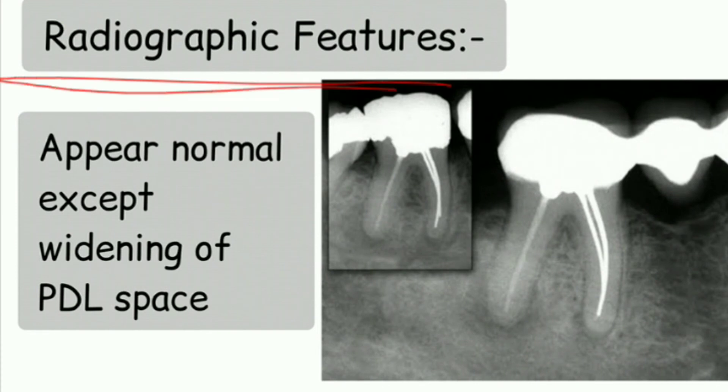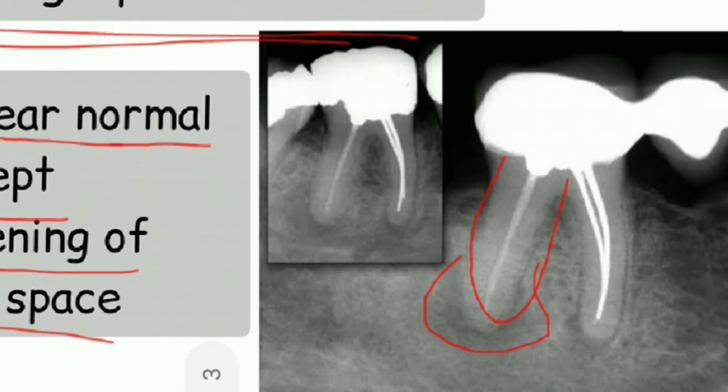In radiographic features, you can see it appears normal except there will be widening of the pedial space. As you can see, this tooth and root are normal, everything is normal except for the widening of the pedial space. Let me zoom in. You can see here the pedial space I am tracing, and there is inflammation. This radiolucent area indicates inflammation of the pedial space.